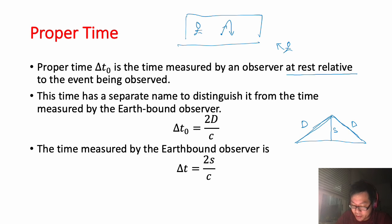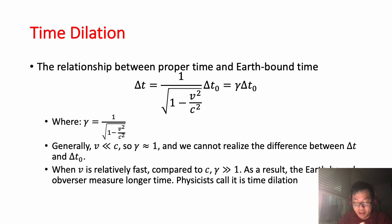In time dilation, the relationship between proper time and Earth-bound time is expressed in the equation: Δt = γΔt₀, in which γ = 1/√(1 - v²/c²), and v is the speed of an object which we are concerned about.